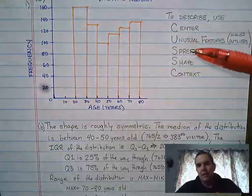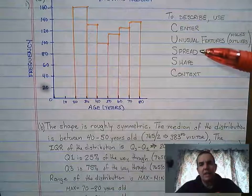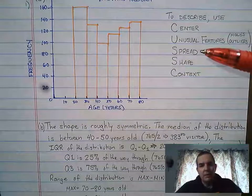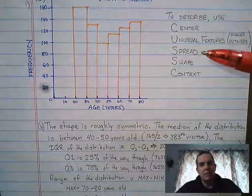I'll jump down to spread. Since we are going to use median for center, we want to go ahead and use either IQR, the interquartile range, or range for spread. Those are what gets matched with median. If we had used mean, we would have used standard deviation.